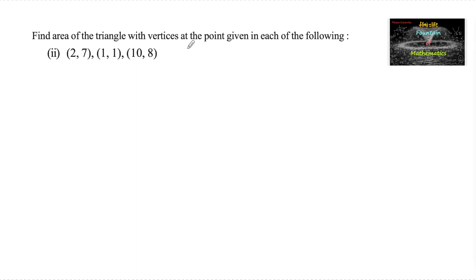Find area of the triangle with vertices at the point given in each of the following. Let A(2,7), B(1,1), and C(10,8) are the vertices of triangle ABC.